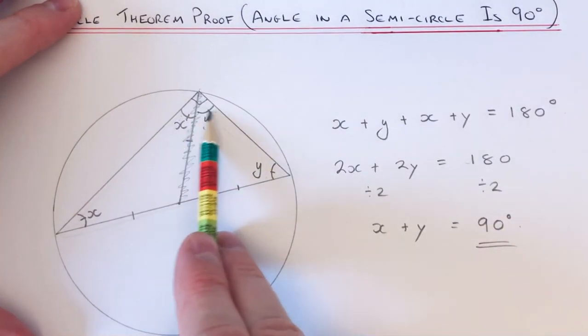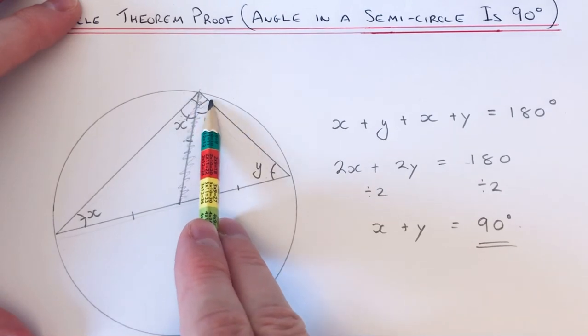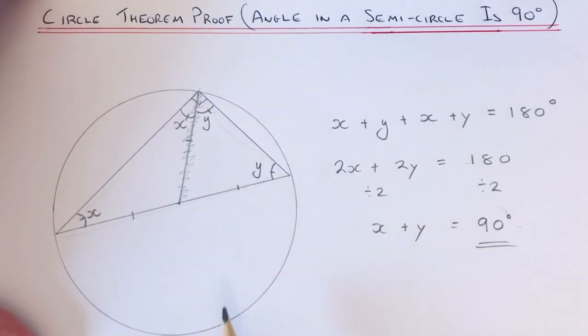So as you can see then, X plus Y is 90, so we've proved our circle theorem that angle in a semicircle is 90 degrees.